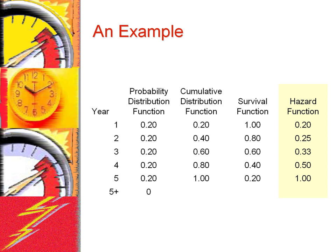Now we can calculate the hazard function. This is the function that calculates the probability of the event occurring this year, given that it has not occurred in the prior years. It is calculated as the ratio of the probability distribution function and the survival function. Note that the hazard function increases each year, as the longer a prosthesis does not fail, the more likely it will fail in the remaining years.